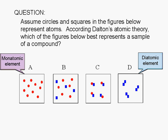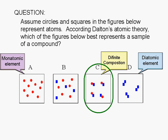Therefore, Figure C represents a compound. Its contents have a definite composition. The correct answer is Figure C. Figure B is an example of a mixture of two elements.